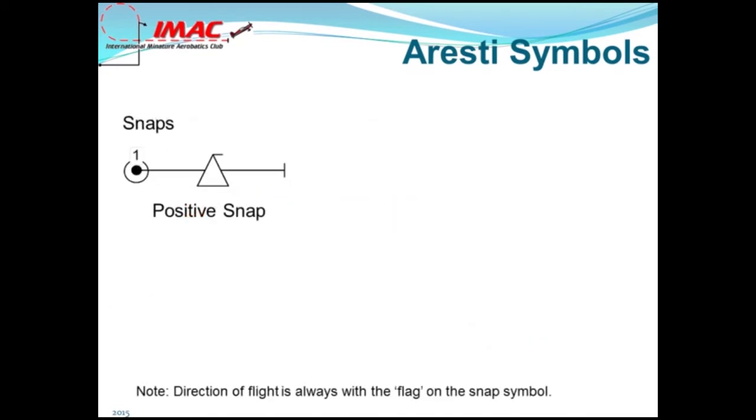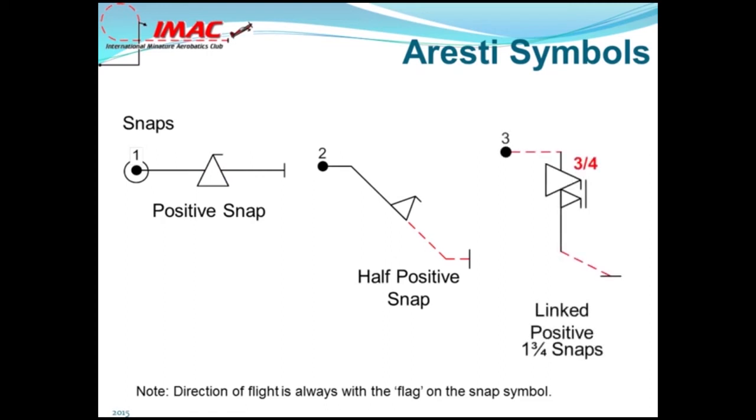Snap rolls, or sometimes called flick rolls, are drawn as a triangle crossing the line. The direction of the flight will be with the flag. Half positive snap roll is drawn as a smaller triangle that sits on the line. Figure three is a linked one and three-quarter positive snap on a vertical downline. Like linked rolls, snap rolls will have a line joining the triangle.